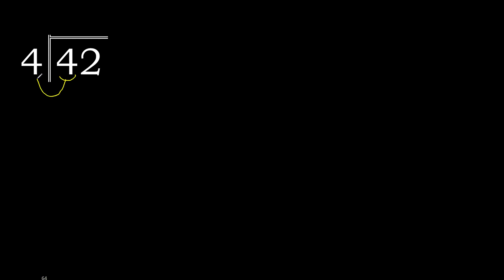42 divided by 4. 4 is not less, therefore we work with 4. 4 multiplied by which number is nearest to 4 but not greater? 4 multiply by 2 is 8 — 8 is greater. 4 multiply by 1 is 4 — not greater. 4 minus 4 is 0.